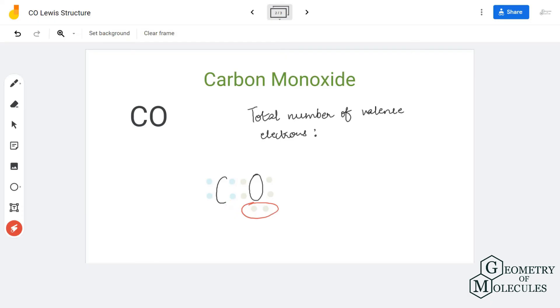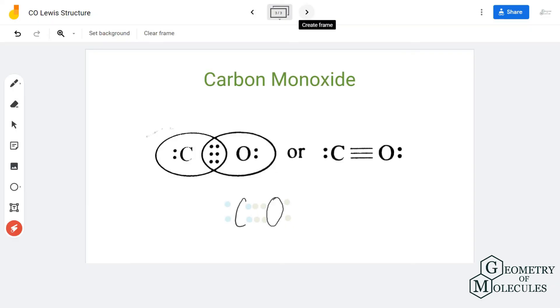Now there is a triple bond between carbon and oxygen, and the octet of carbon is completed as it has eight electrons. The octet of oxygen is also completed as it has eight electrons, and there is a lone pair on carbon atom and a lone pair on oxygen atom. Hence, the Lewis structure of carbon monoxide will have a triple bond between carbon and oxygen atom, a lone pair on carbon atom, and a lone pair on oxygen atom.